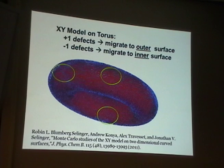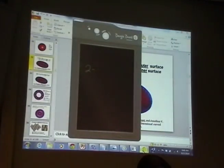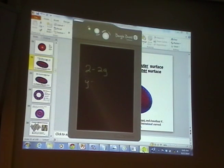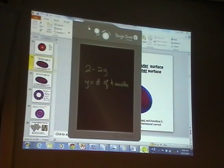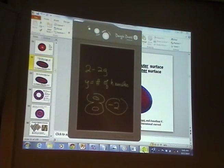The Gauss-Bonnet theorem tells us the total topological charge for a vector field on a body is 2 minus 2G, where G is the number of handles. A sphere has no handles, so G equals zero and total topological charge is 2. A doughnut has one handle, G equals 1, so 2 minus 2G equals 0. The figure-8 has two handles, G equals 2, giving minus 2 topological charge. Plus 2 for a sphere, 0 for a torus, minus 2 for the figure-8.